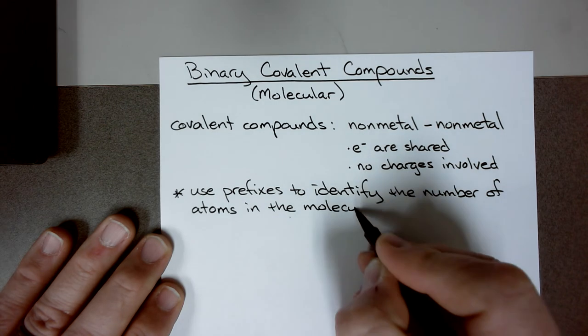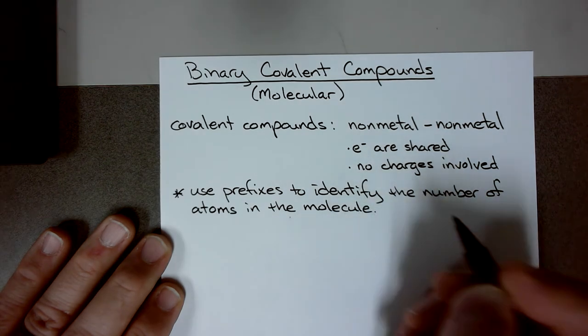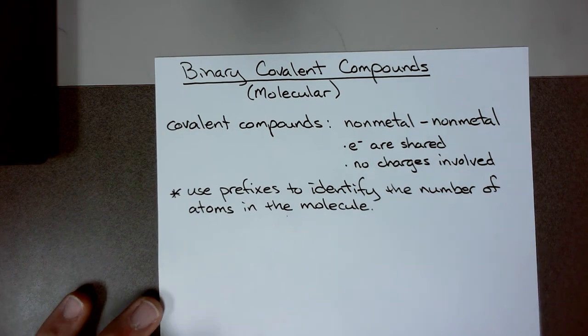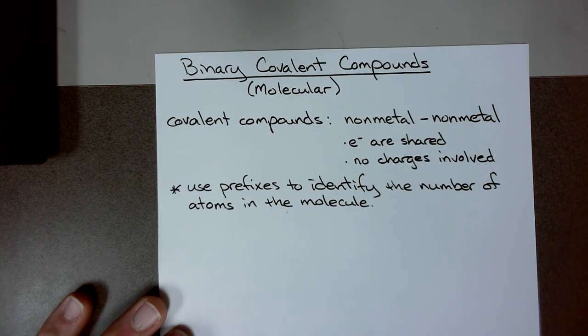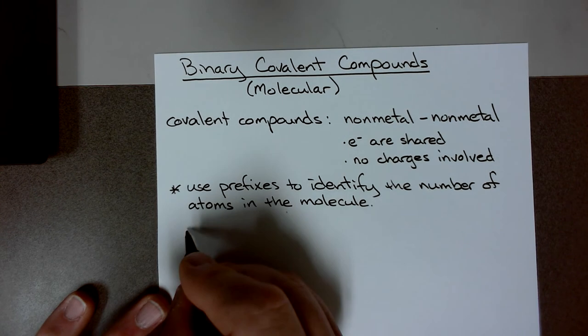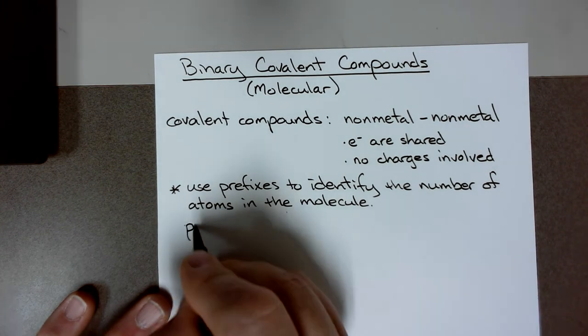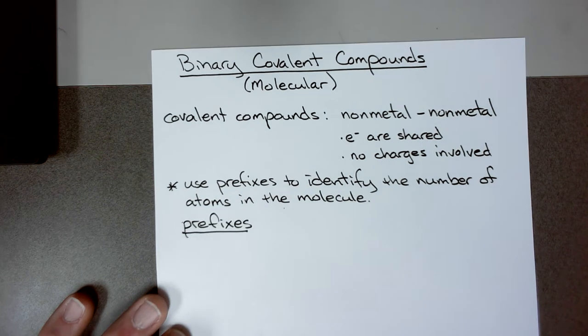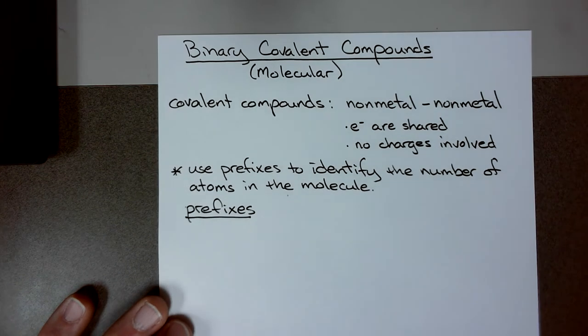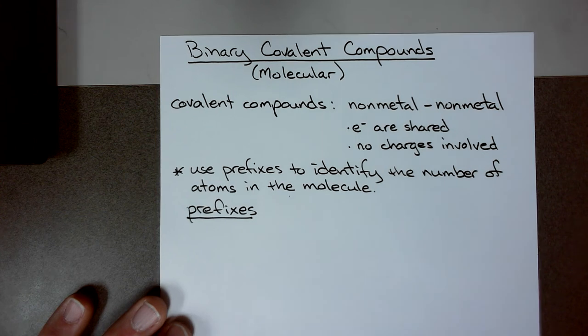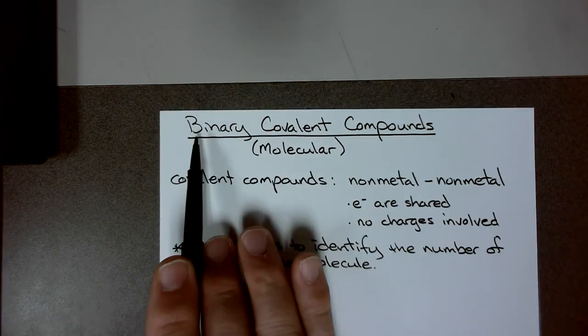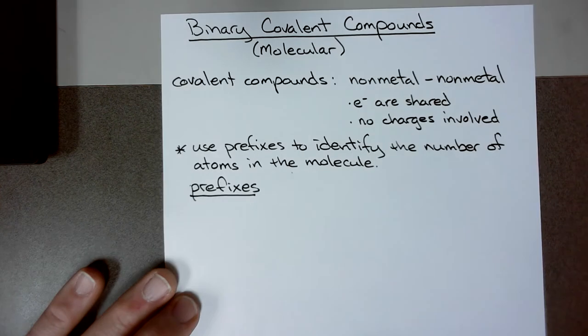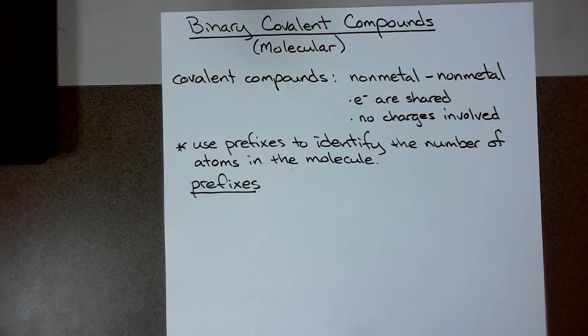Use prefixes to identify the number of atoms in a molecule. This is different than ionic. With ionic, it's the charges that determine the number of atoms. Here we have to use prefixes. Let's go through those prefixes. These prefixes are Greek prefixes, not Latin. A Latin prefix would be like bi. Here we're using binary meaning two. These are going to be Greek. Some of them are the same and some are different.